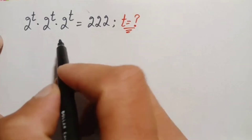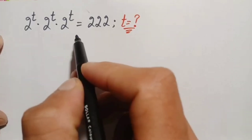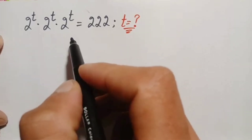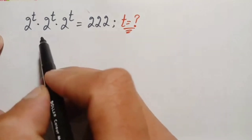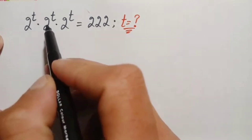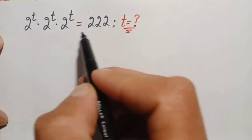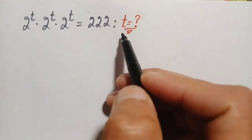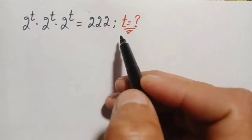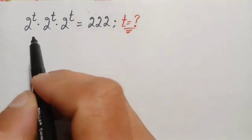Hello everyone, you are welcome to solve this interesting exponential math problem, which is 2 to the power t times 2 to the power t times 2 to the power t is equal to 222. Here we will try to find out the value of t, so how can you solve this exponential math problem?